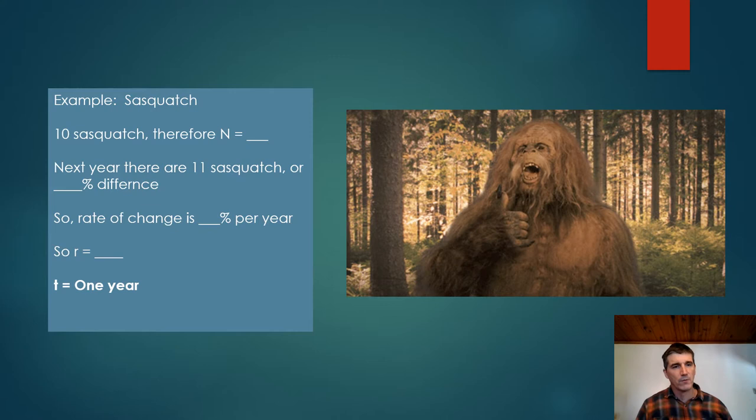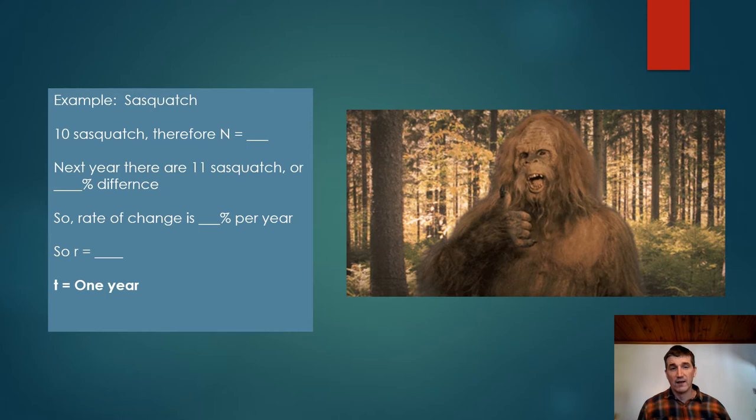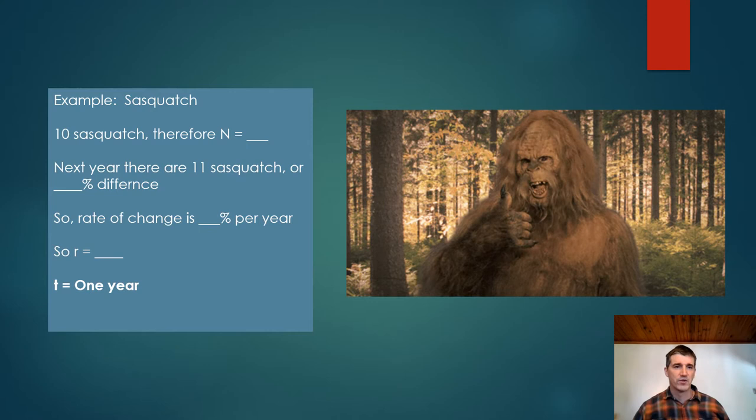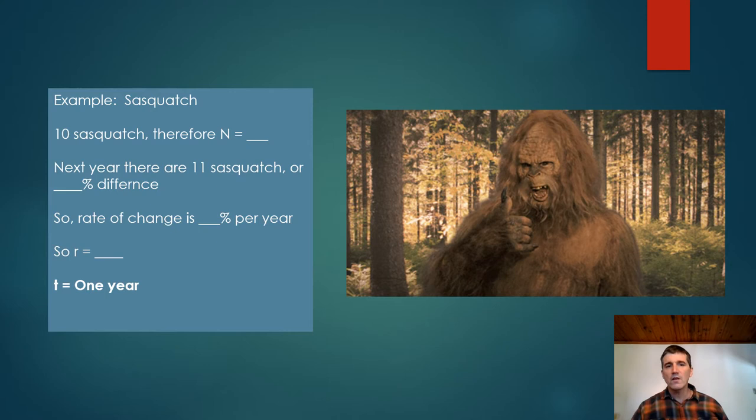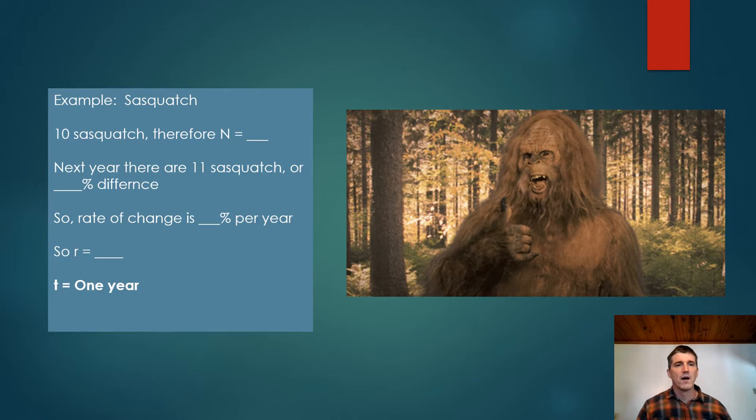Obviously this is a made up example. If we had 10 Sasquatches, our population would be 10 or N would be 10. If next year we had 11 Sasquatches, we went from 10 to 11, then that represents a 10% difference. So the rate of change is 10% per year. So given a 10% rate of change, our R would be 1.1 in this situation.